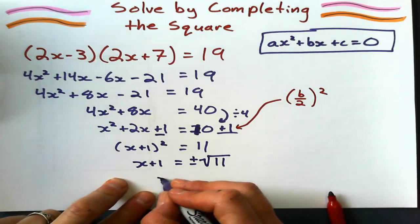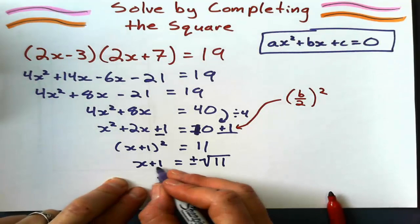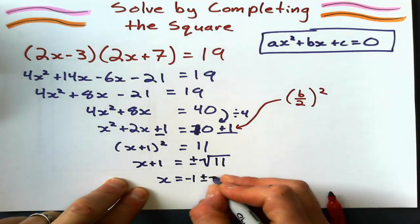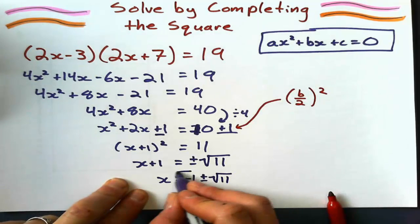And finally, to get x by itself, to solve for x, I'm going to subtract that 1, giving x equals negative 1 plus or minus the square root of 11.